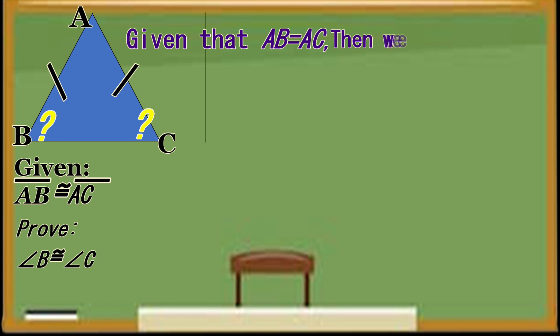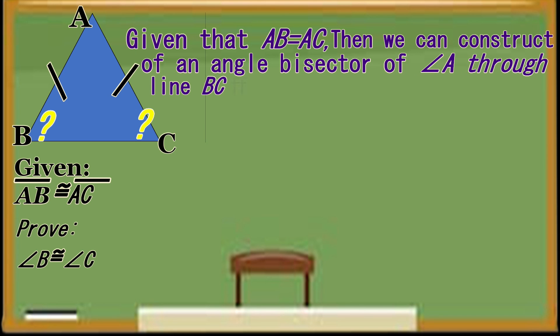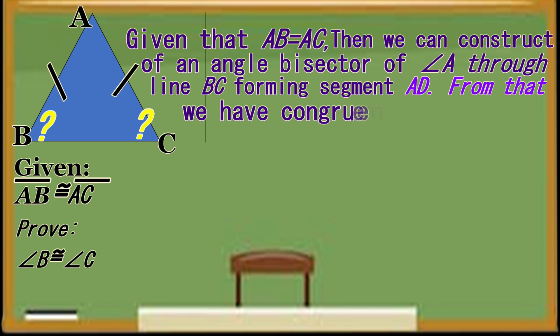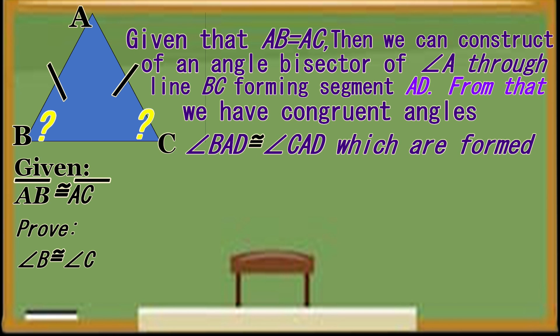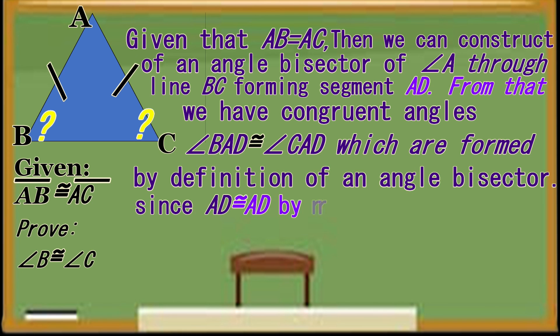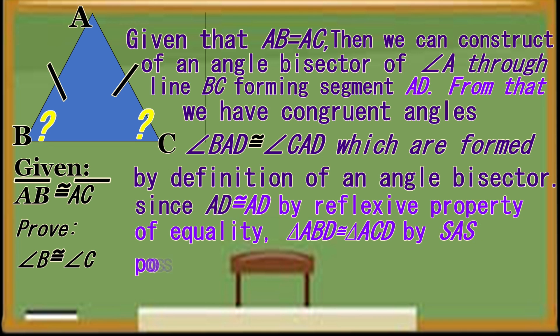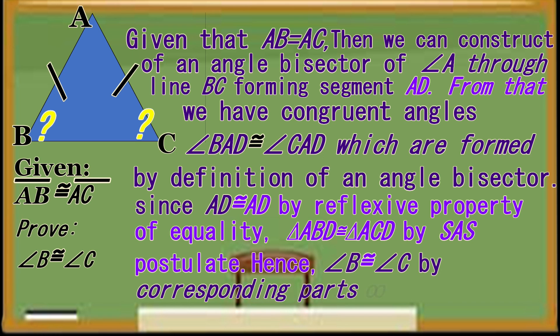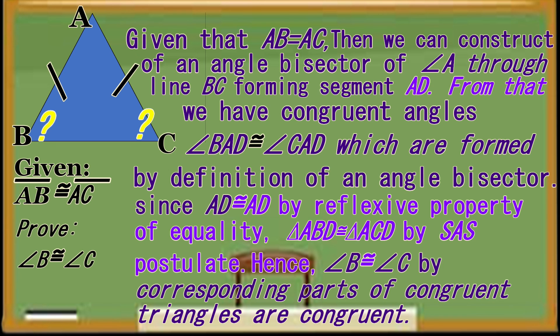Given that AB equals AC, we can construct an angle bisector from A through line BC forming segment AD. To confirm congruent angles: angle BAD is congruent to angle CAD, which are formed by definition of an angle bisector. Since AD is congruent to AD by reflexive property, triangle ABD is congruent to triangle ACD by SAS postulate. Hence, angle B is congruent to angle C by corresponding parts of congruent triangles are congruent.